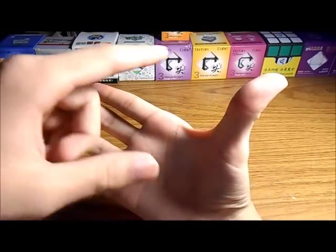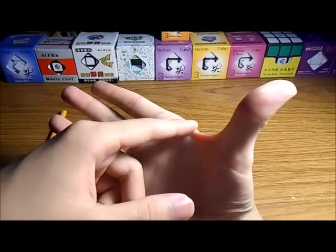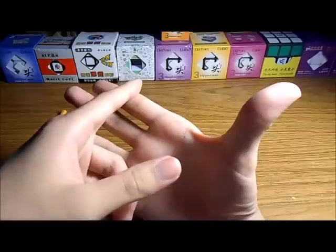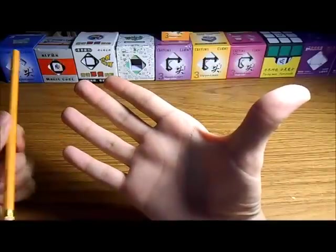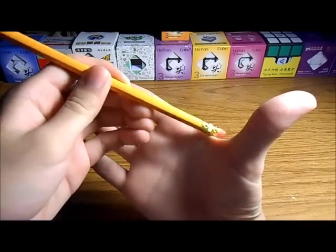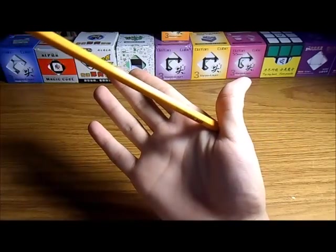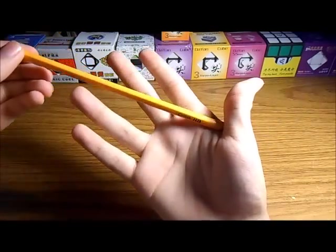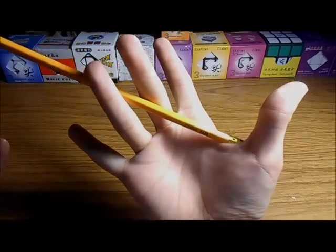As you can see, there is some flab or web, whatever you guys want to call it, between my thumb and index finger. What you want to do is take one end of the pencil and place it just by the flab, like this. And the other end, between the middle and ring finger. So it should end up looking like this.